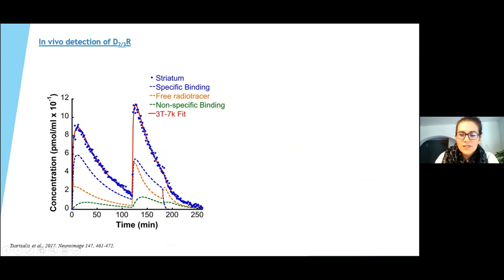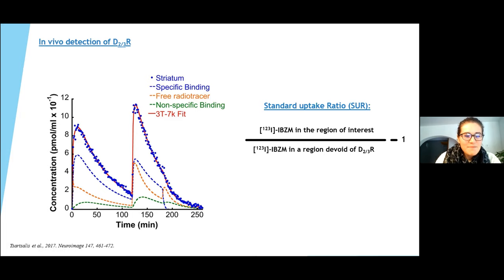However, this approach requires several injections and a long scan acquisition time. A simpler density index can be calculated using the ratio of the radioactivity in the regions of interest to the radioactivity in a region devoid of receptors. This zone corresponds to the non-specific signal. As the cerebellum is free of dopaminergic receptors, it therefore represents a reference region for the IBZM quantification.